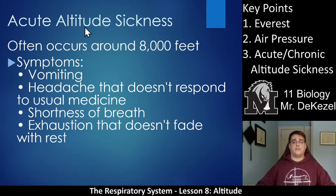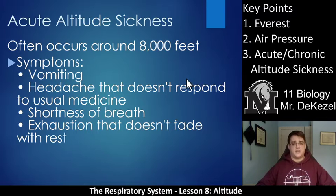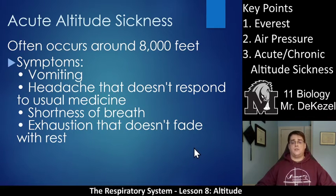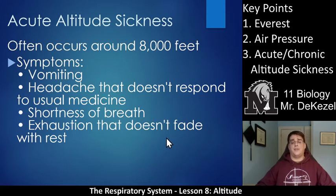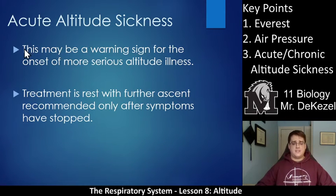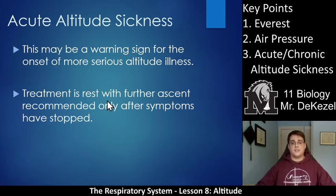Acute altitude sickness often occurs around 8,000 feet. Some of its symptoms can include vomiting, headache that doesn't respond to usual medicine like Tylenol, shortness of breath, or exhaustion that doesn't fade with rest. This happens when you climb quickly. Acute altitude sickness is usually less severe — not life-threatening — but it can be very annoying and you generally feel unwell. These signs could be a warning of the onset of more serious altitude illnesses like chronic altitude sickness.